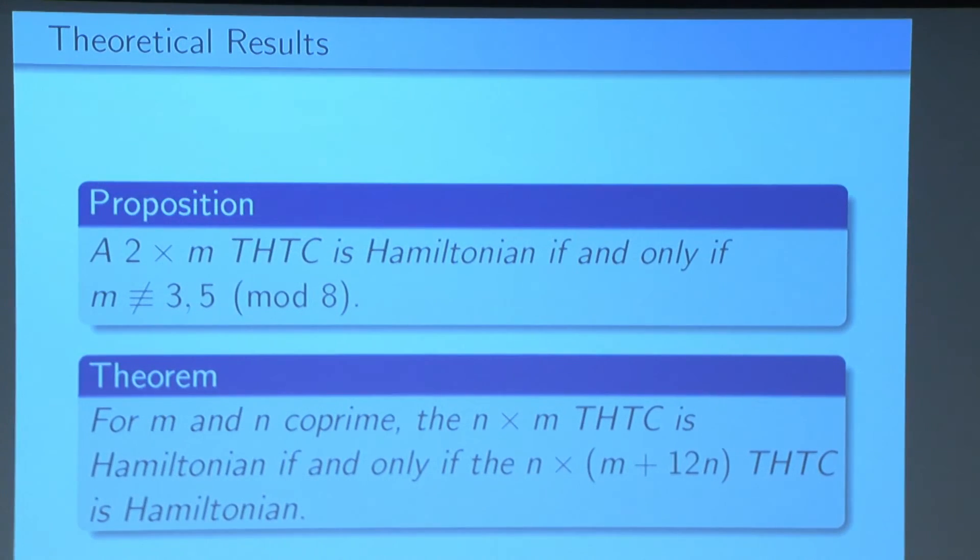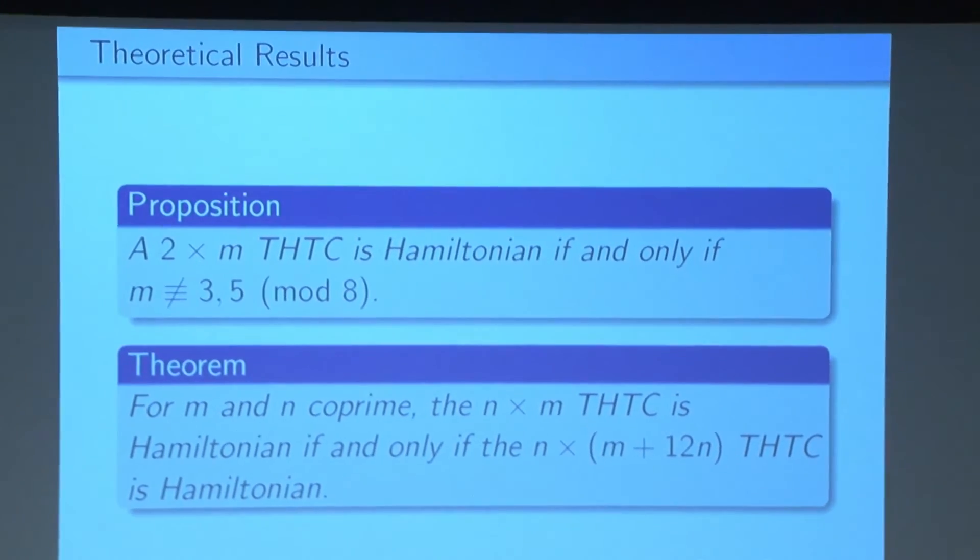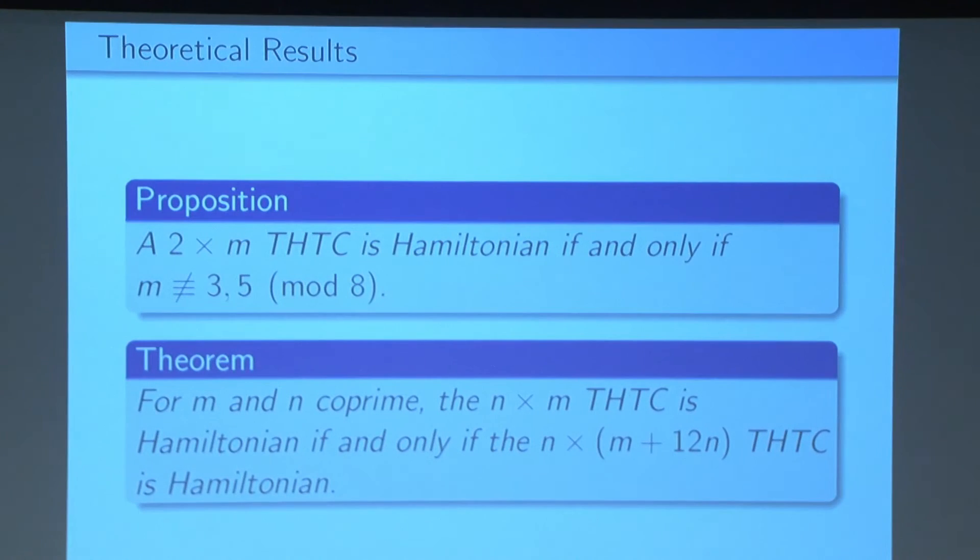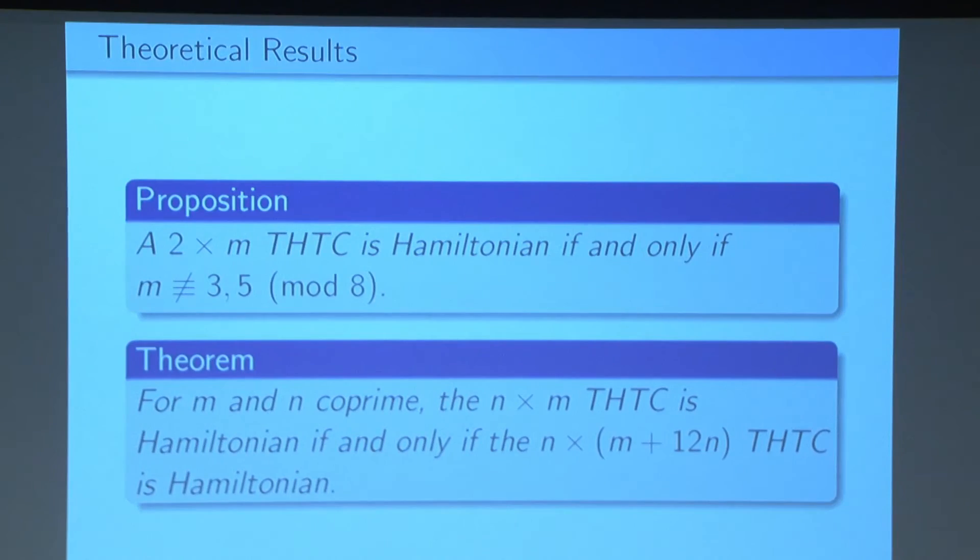We've classified all two-by-N two-hole torus checkerboards. We know which of them are Hamiltonian and which are not. And we could construct similar proofs for three-by-N and four-by-N cases. But they get progressively more complicated, and for five-by-N it completely breaks down. And here, we've shown that there's a periodicity to which ones are Hamiltonian. So if we add 12 times the number of rows to the number of columns in our checkerboard, then the larger checkerboard is Hamiltonian if and only if the smaller one is.